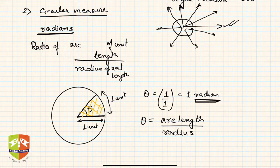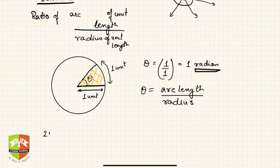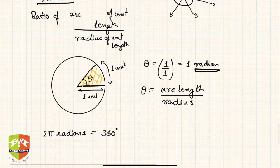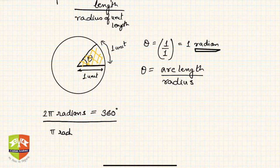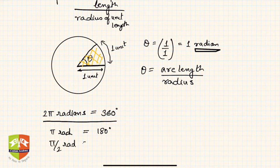Please remember the relation between radians and degrees: 2π radians is equal to 360 degrees. Therefore, π radians equals 180 degrees, and π/2 radians equals 90 degrees, and so on.